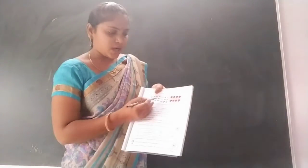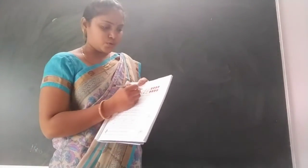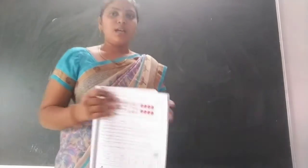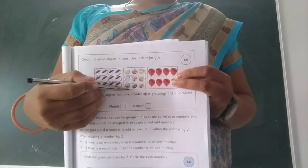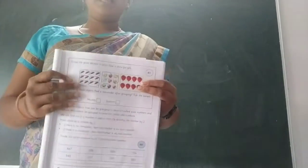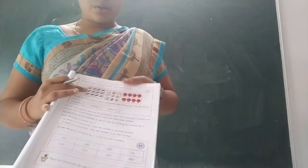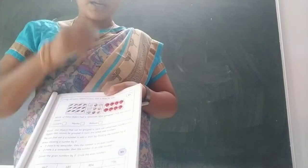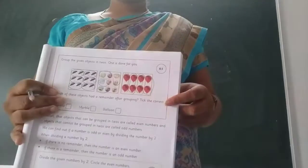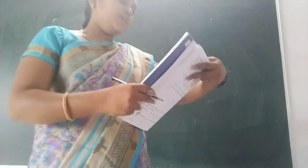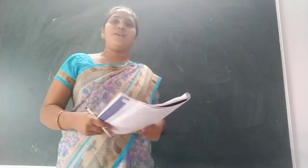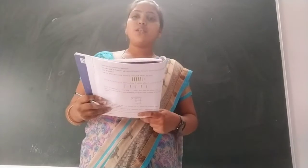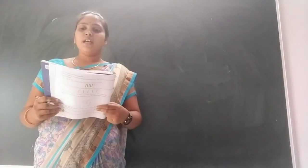Now in the next one, children, we are given marbles. You have to make groups of 2 marbles as one group. Here I made 2 marbles as one group. Like this, you have to make groups of 2 marbles. Now in the second one also, we are given balloons. Here also you have to make groups of 2. Which of these objects had a remainder after grouping? After grouping, does any object have a remainder, children?